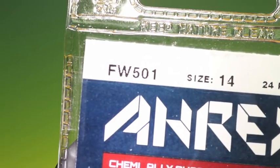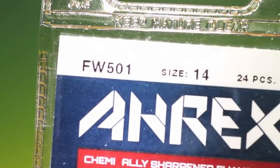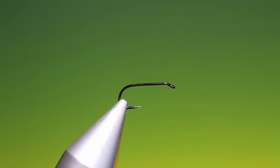Okay, we'll start with an RX FW 501 size 14 barbless dry fly hook. This is the pheasant tail X caddis.